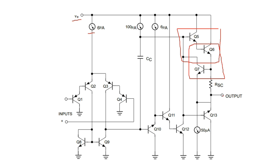Here we have a resistor; this is the input and this is the output. We have other transistors Q4, Q3, Q2, and Q1 with inputs going to the base of each transistor. The emitter of each transistor is connected to ground. The bases of two transistors are connected together, and their emitters are also connected to ground.